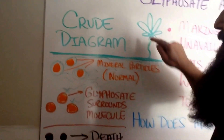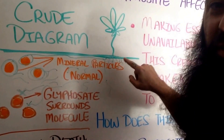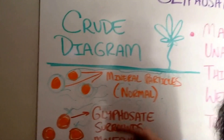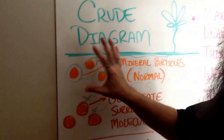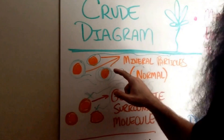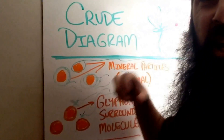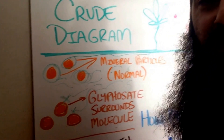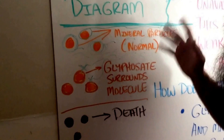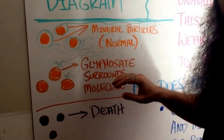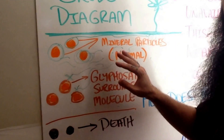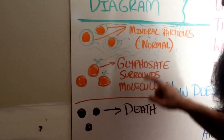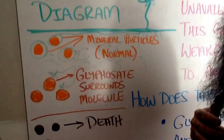So I got this crude diagram. Here's my little cannabis plant, here's my little roots, and you see these little green lines. Now a normal molecule, a normal mineral particle is this bright orange dot — looks good to the roots. The roots are able to get over to it, access it, and process it. What happens when you introduce glyphosate into the picture? Glyphosate surrounds those specific molecules, which basically makes those molecules unavailable. So when the roots try to process that molecule, it can't do it anymore, and this leads to death.